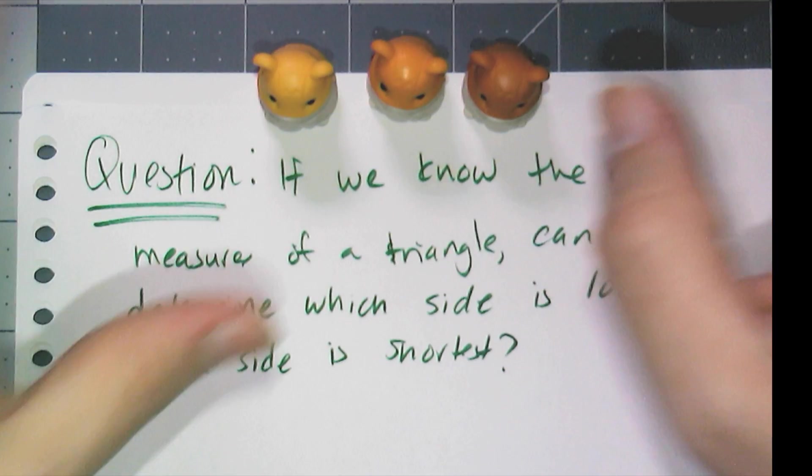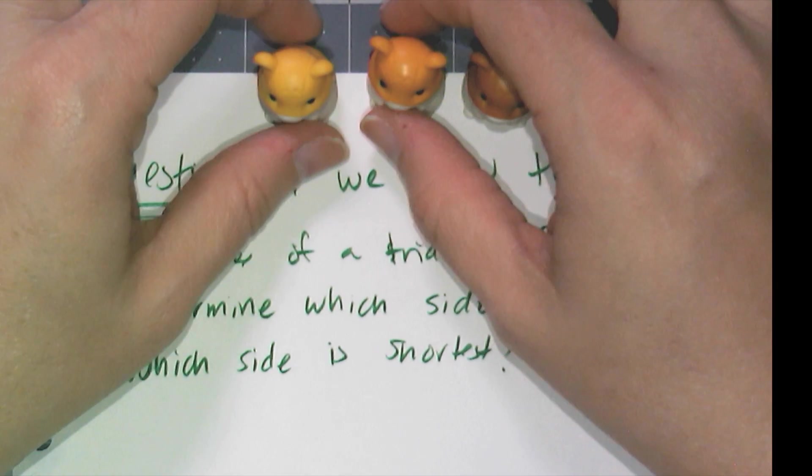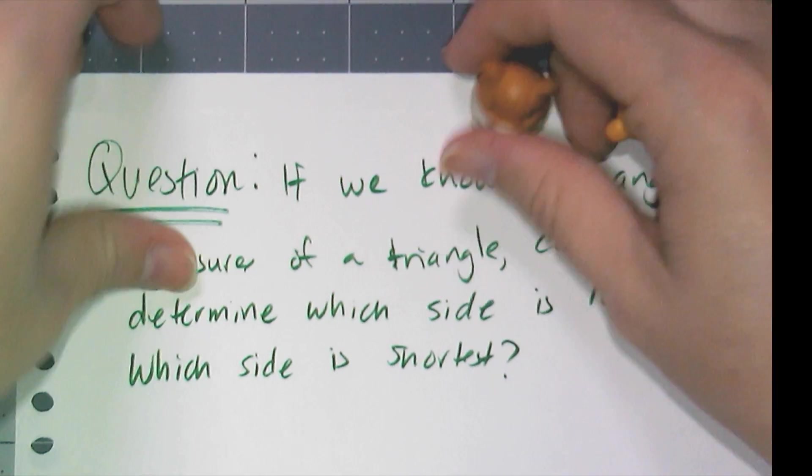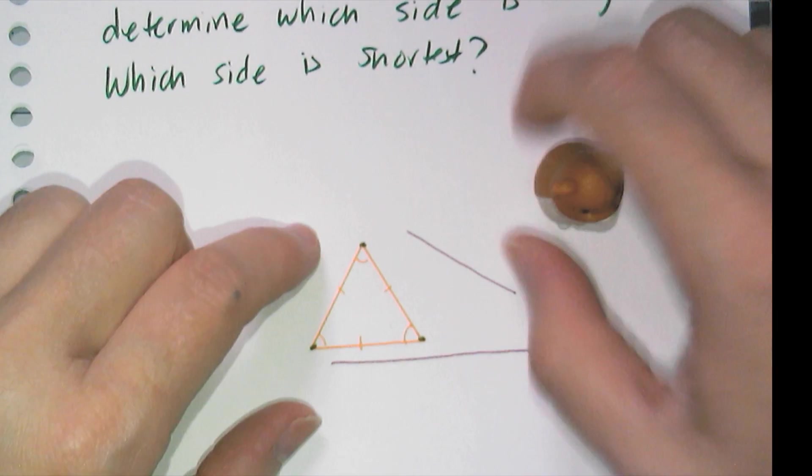So in order to figure this out, we are going to use our video hamsters, and I'm going to arrange them into an equilateral triangle.